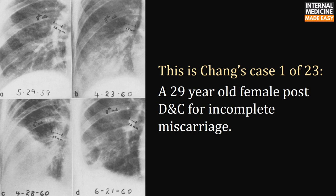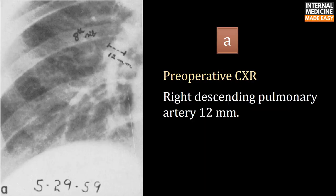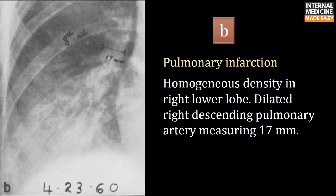This is Chang's case number one of 23: a 29-year-old female post D&C for incomplete miscarriage. The pre-operative chest X-ray shows the right descending pulmonary artery measuring 12 mm. The X-ray after D&C shows pulmonary infarction with homogeneous density in the right lower lobe and a dilated right descending pulmonary artery measuring 17 mm.